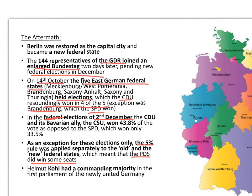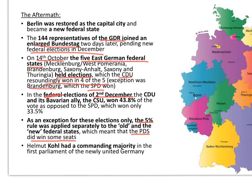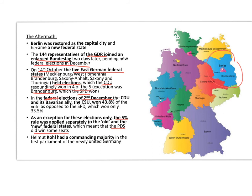Helmut Kohl had a commanding majority in the first parliament of the newly united Germany.